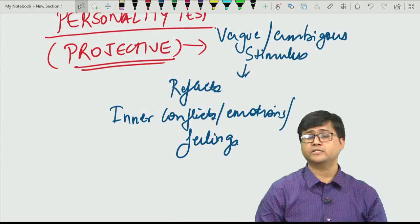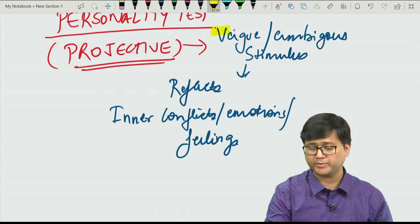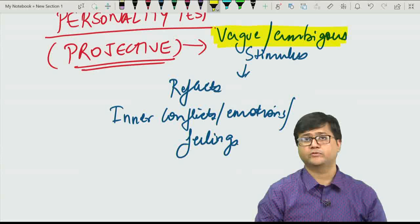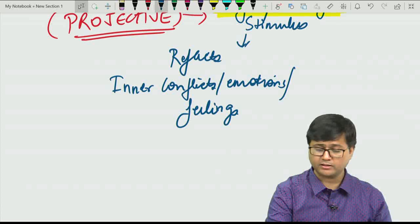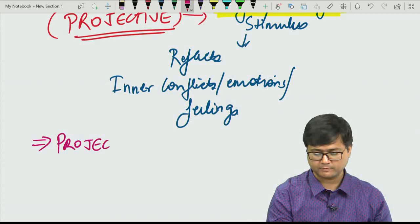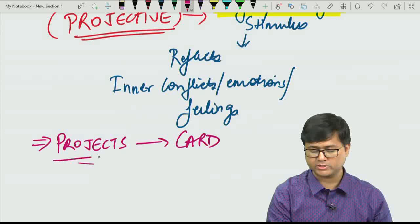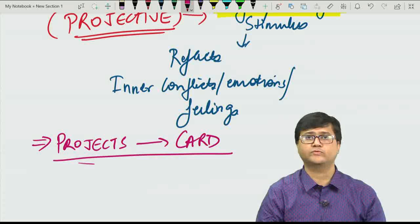The stimulus is vague and ambiguous and it can be interpreted differently by different individuals. Person A responds differently than Person B, and subsequently this reflects their inner conflicts, emotions, or feelings. In other words, the person projects his or her own feelings onto the card. This is the underlying principle behind projective personality tests, and TAT is one of its kind.